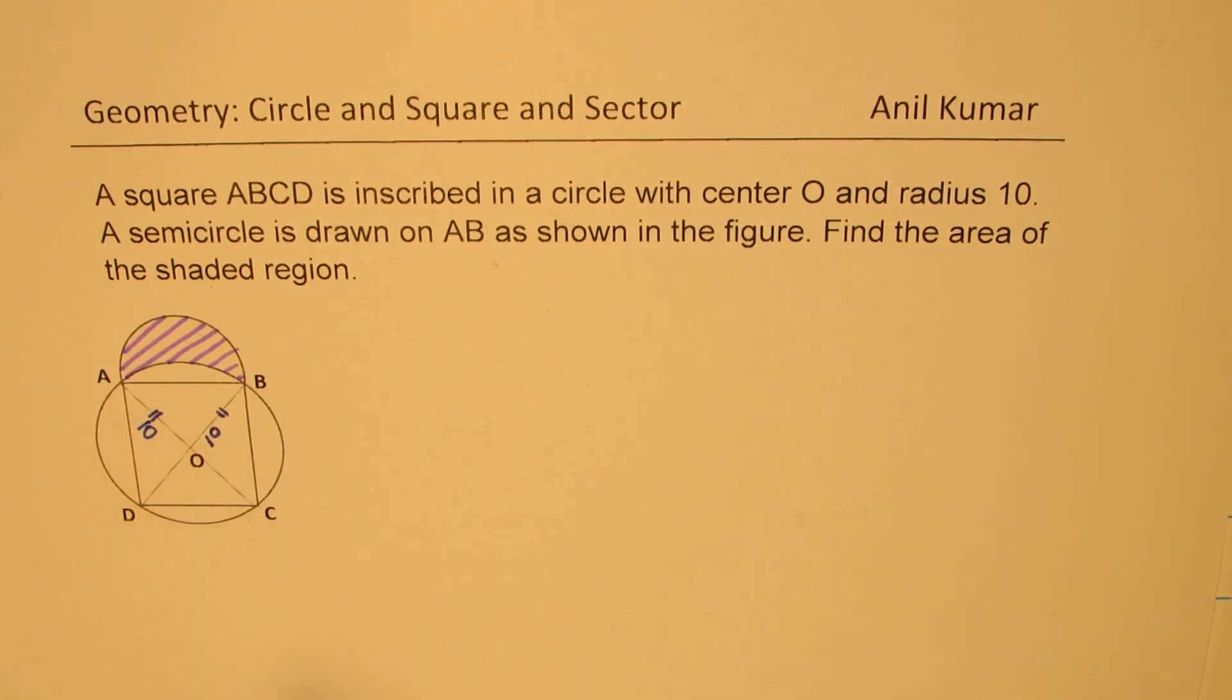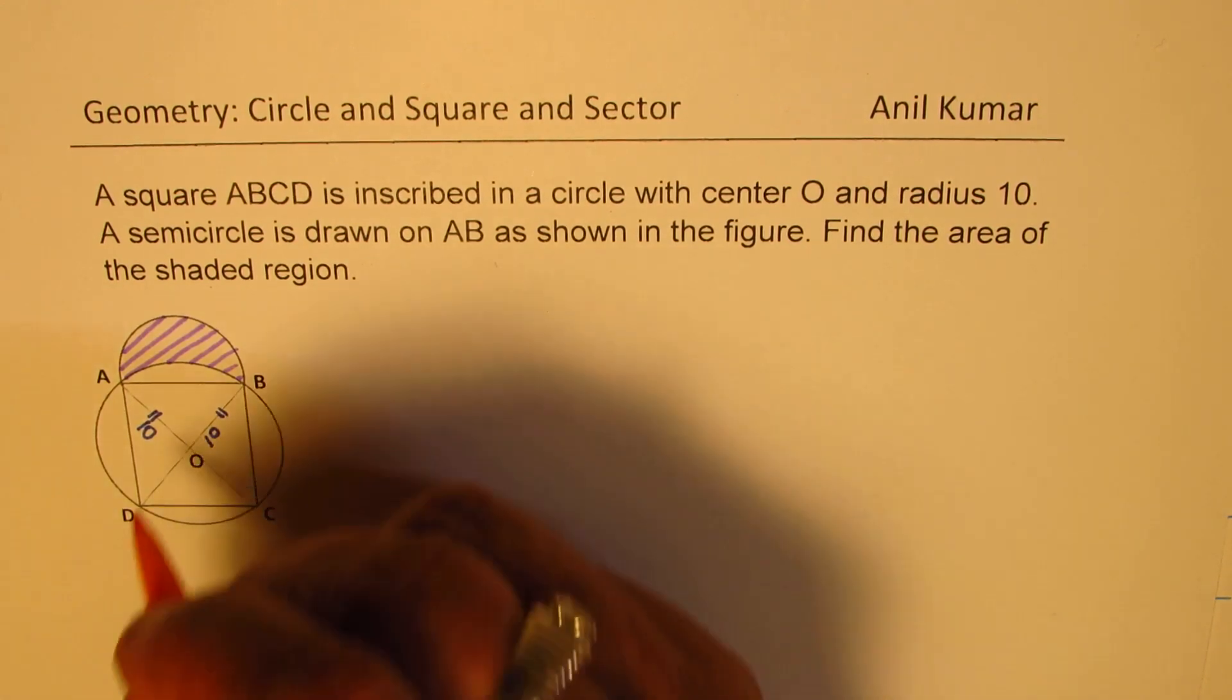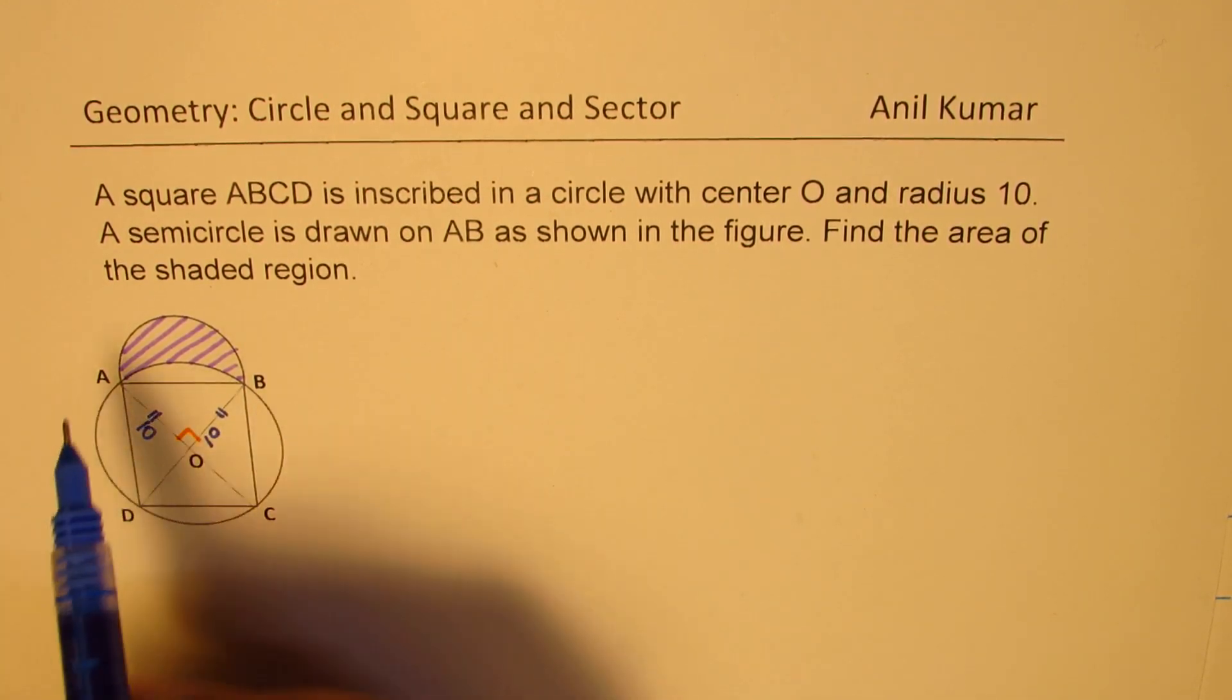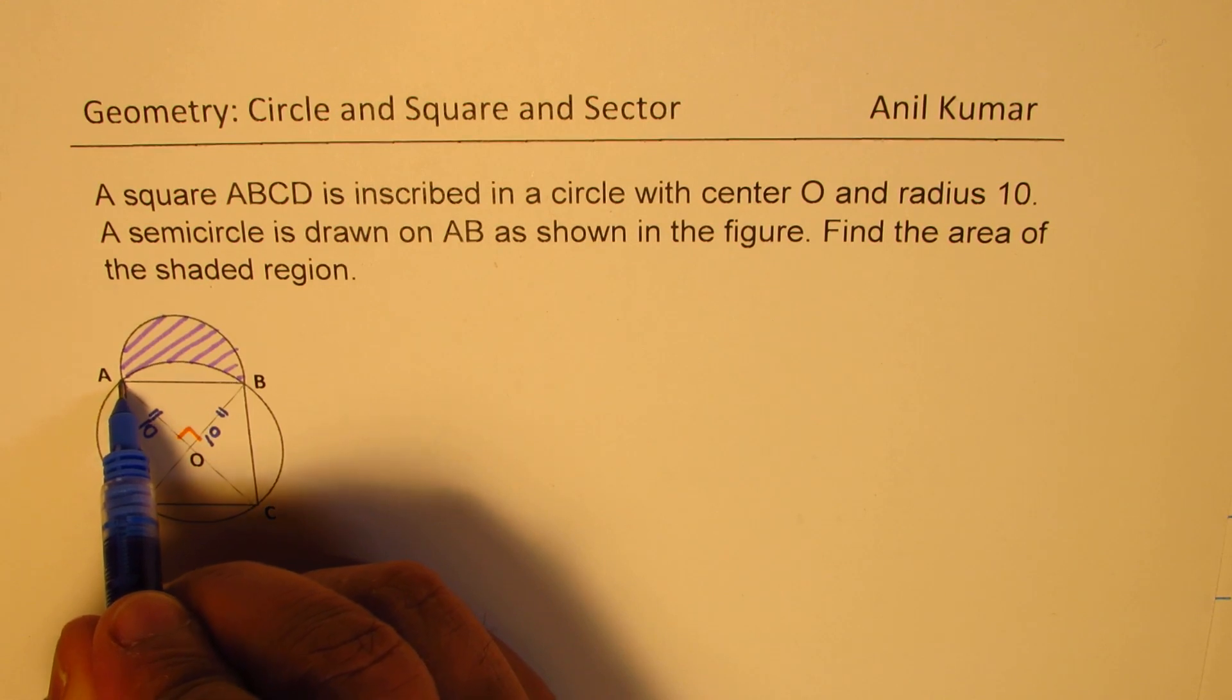Now, in a square, the diagonals will always intersect at 90 degrees. So that makes this problem slightly simpler. So we do get a right-angled triangle, correct?